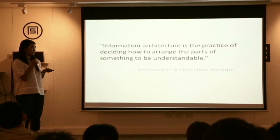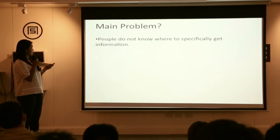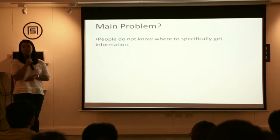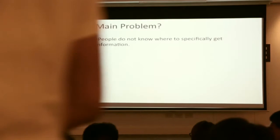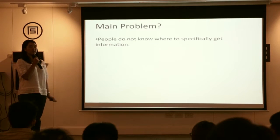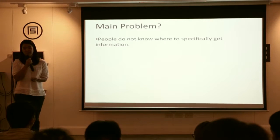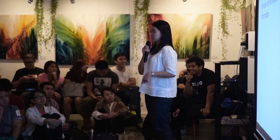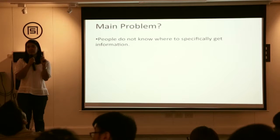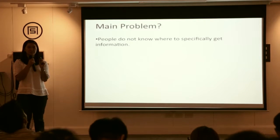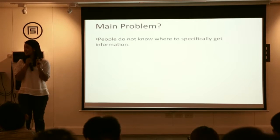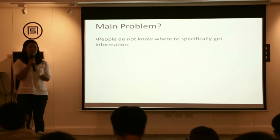The problem is you don't know where to specifically get government information. For example, you want to apply for a new passport — where do you go? You go to DFA because it's a well-known government website. But what about a lesser-known service, like a Cedula? You want to get a Cedula — where do you go?